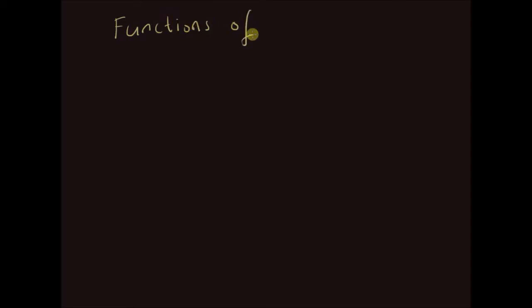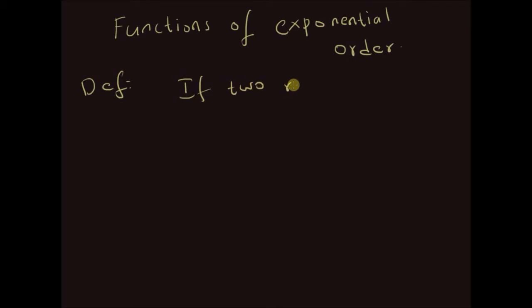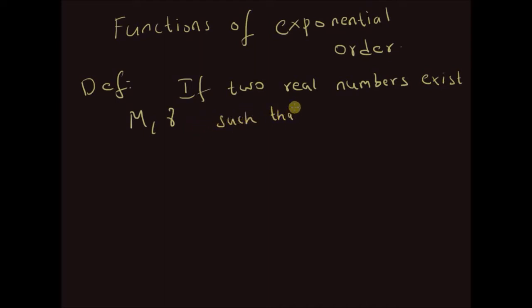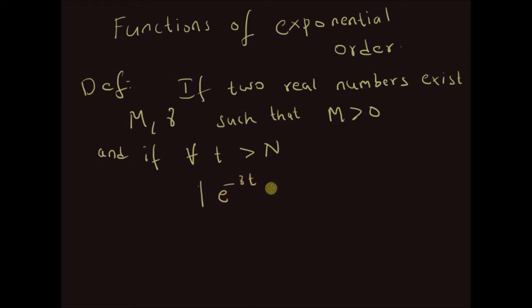Let us look at functions of exponential order. The definition can be given as follows. If two real numbers m, gamma exist such that m is greater than 0, and for all values of time t greater than a value n, if the absolute value of e to the power minus gamma t multiplied by the function f of t is less than the value m,